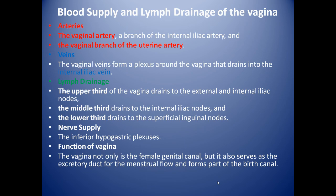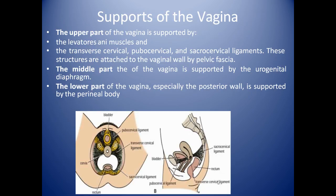The function of the vagina: it is not only the female genital canal but also serves as an excretory duct for the menstrual flow and forms part of the birth canal. Regarding support of the vagina: the upper part is supported by the levator ani muscles and the transverse cervical, pubocervical, and sacrocervical ligaments, attached to the vaginal wall by pelvic fascia. The middle part is supported by the urogenital diaphragm, and the lower part, especially the posterior wall, is supported by the perineal body.